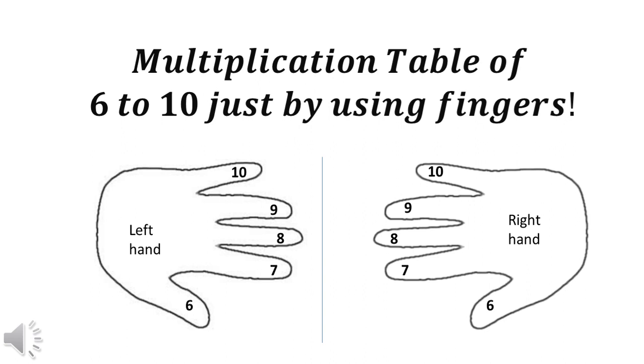As you can see in the figure, mark your left hand fingers starting from thumb to index to middle to ring to the little finger starting with 6. Similarly do it for the right hand fingers.